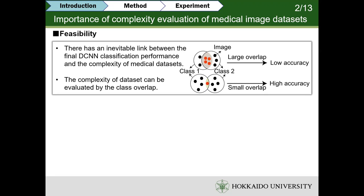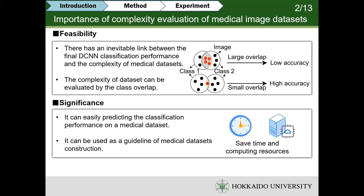Next, I'd like to explain the importance of the complexity evaluation of medical image data sites. How can we predict the final classification performance on a medical image data site? There is an inevitable link between the final classification performance and the complexity of medical data sites. Moreover, the complexity of the data sites can be evaluated by the class overlap. A large overlap between classes will lead to low classification accuracy and vice versa. So, we can use this feature to predict the final classification performance before training models, which can save a lot of time and computing resources. It can also be used to guide the reconstruction of medical data sites.